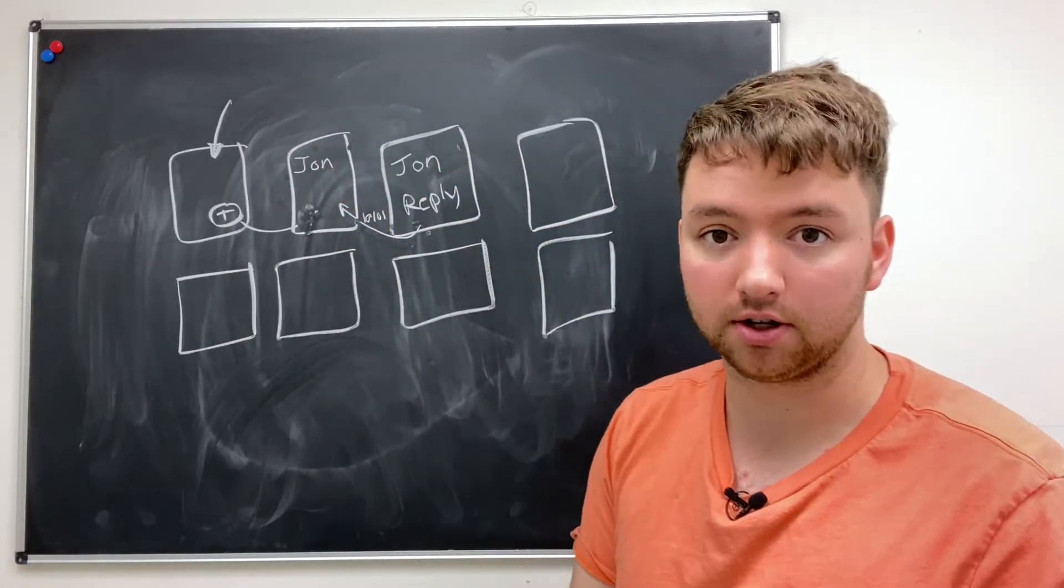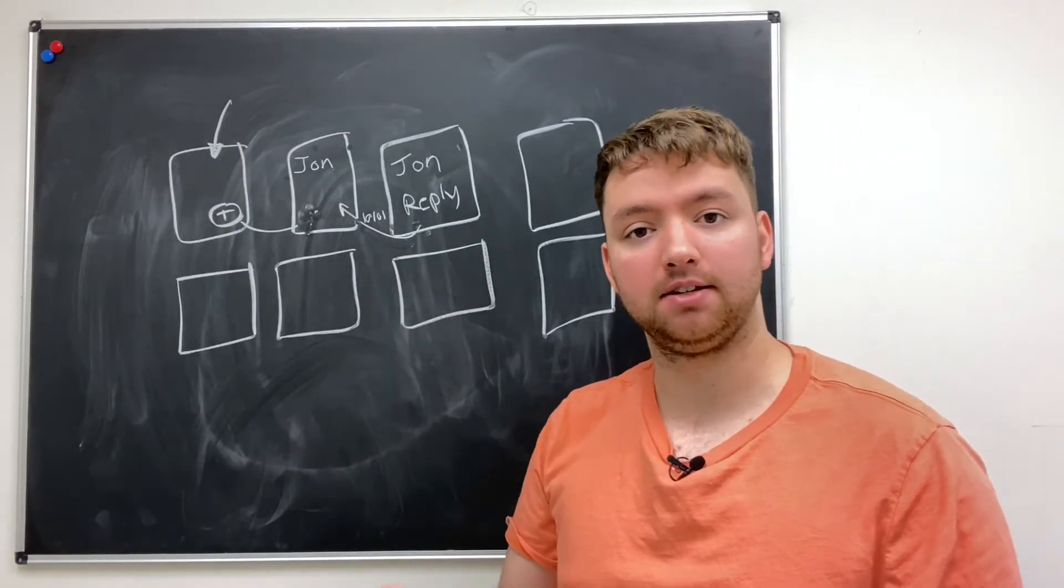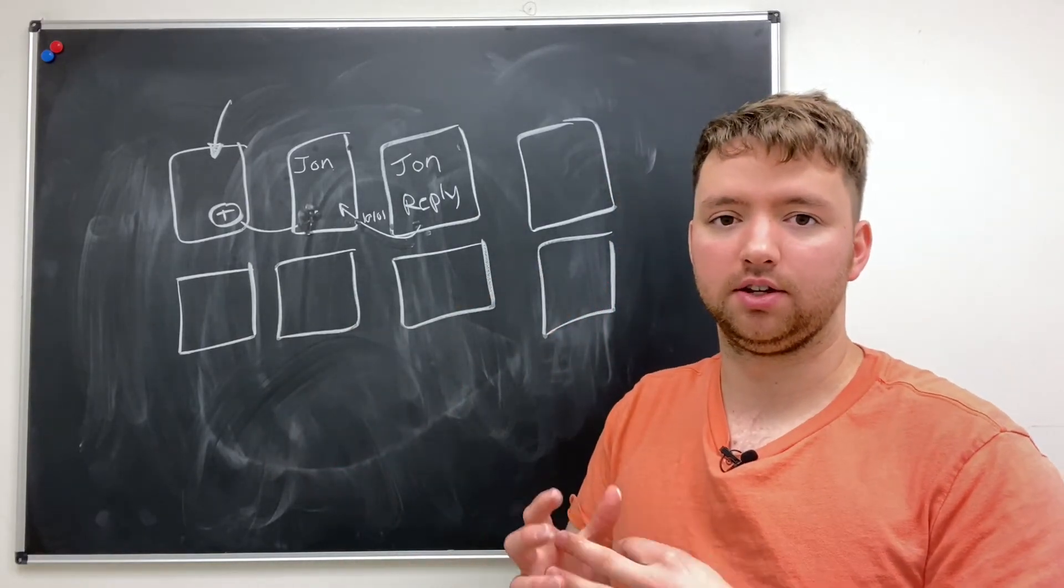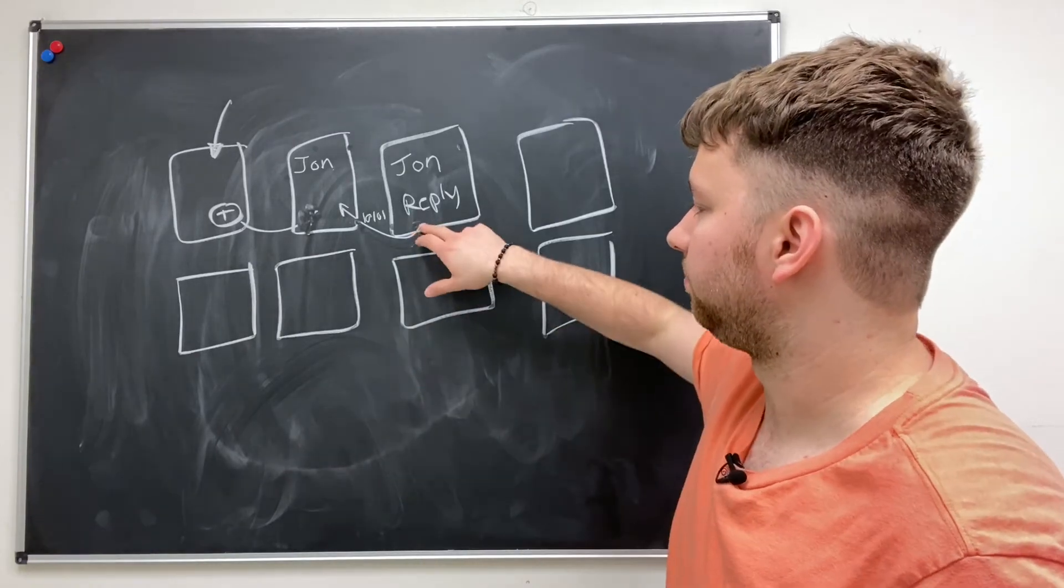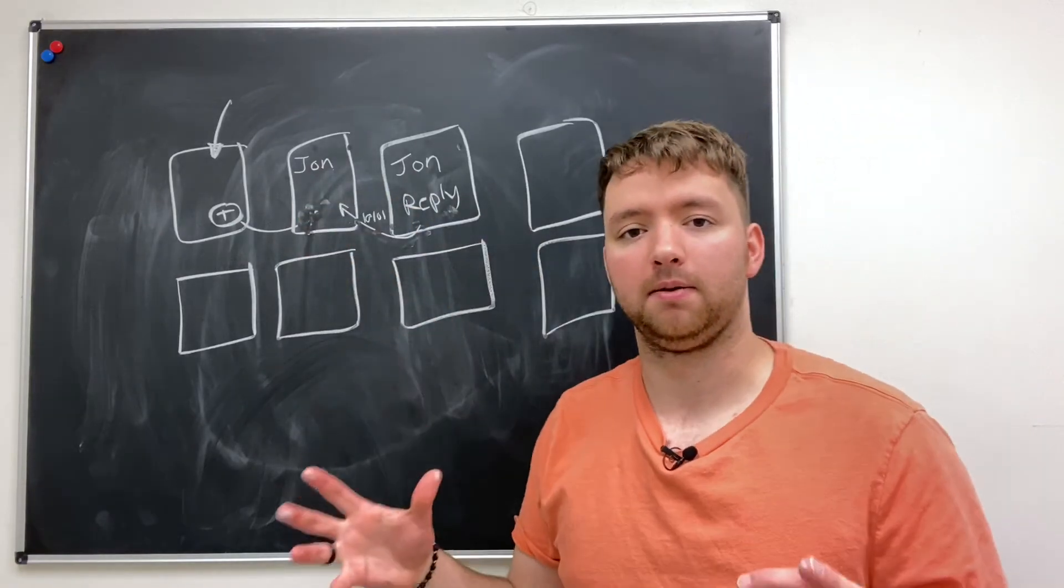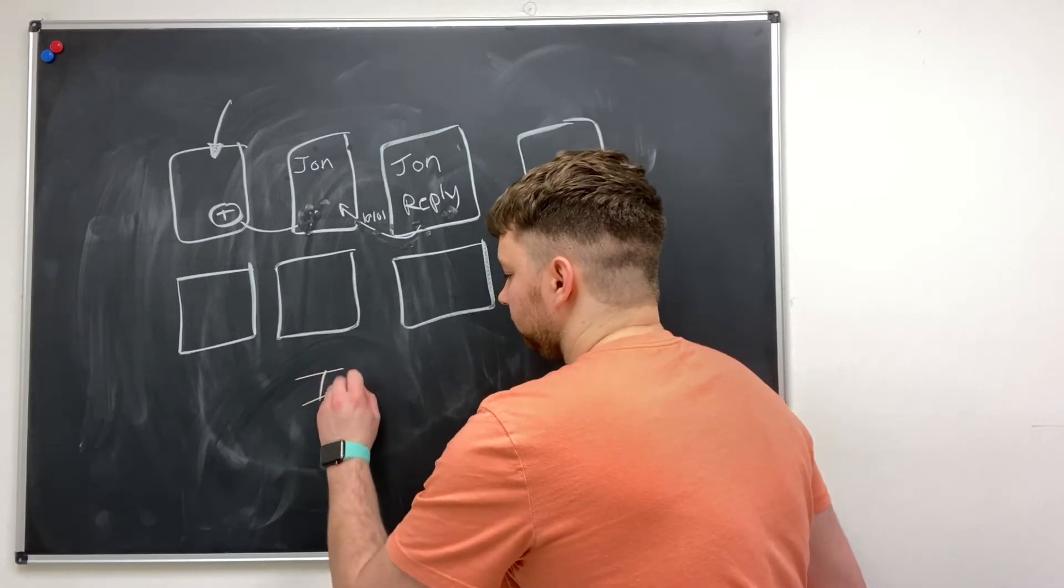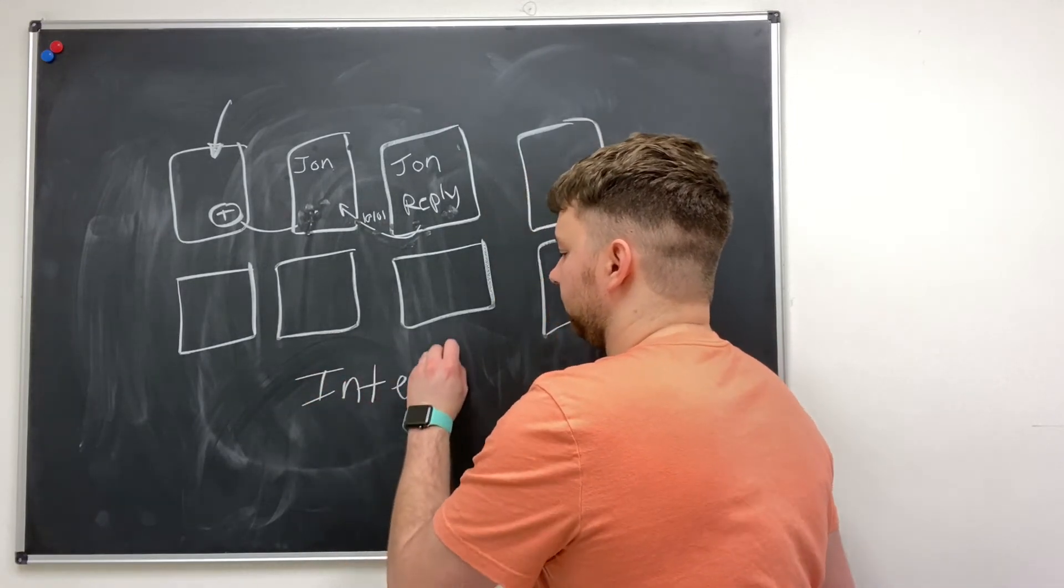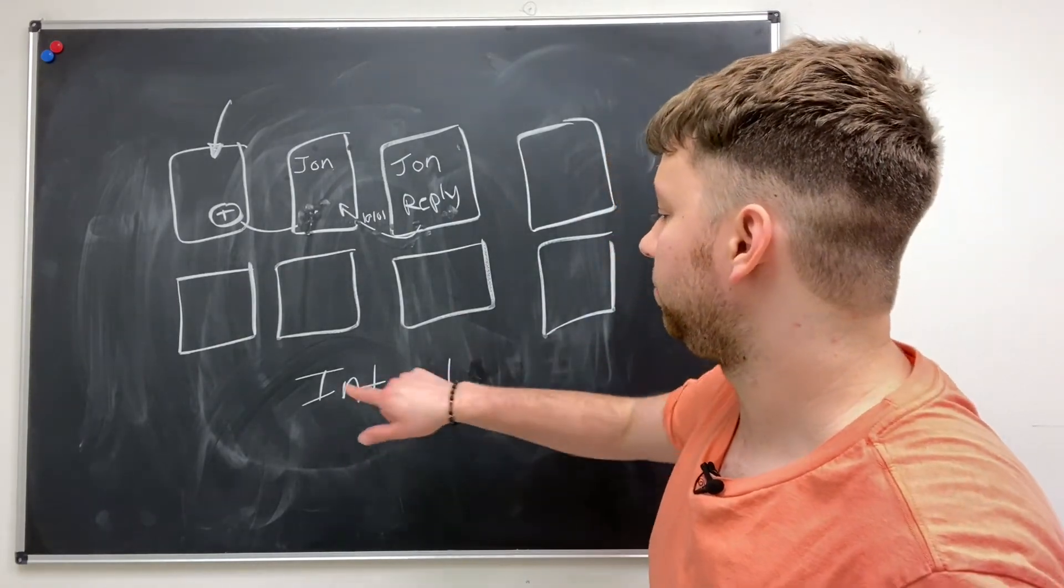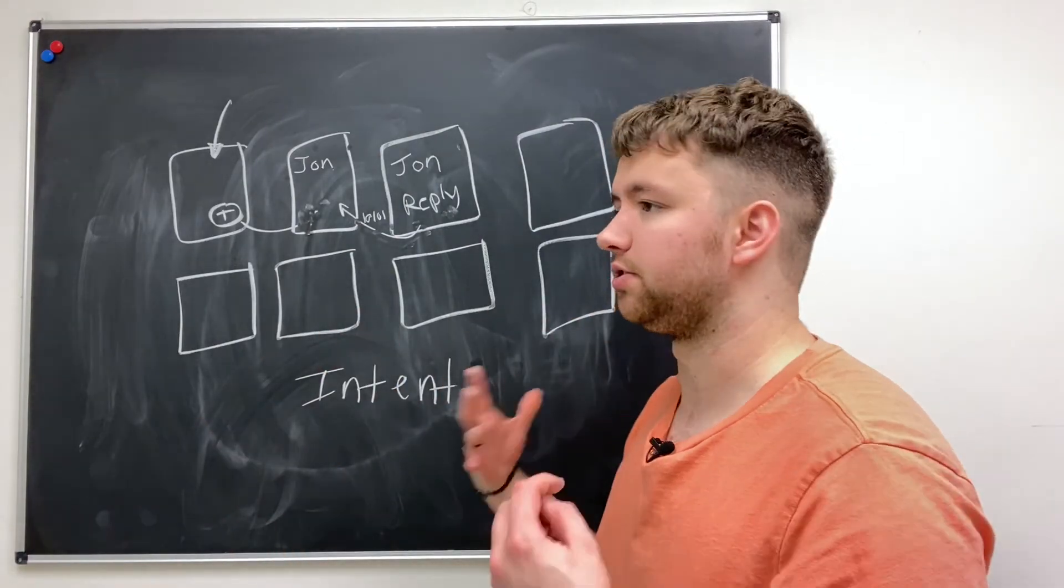And the way we initiate a new activity and pass data is, we're going to get into all of the different ways of doing that, how to get data from this activity to this activity and we're going to be using these things called intents. Yeah, so we'll get into intents and what they are. So we will use an intent to initiate a new activity and pass data to it, but there's various ways of doing it, the passing the data part.